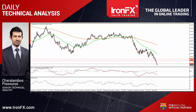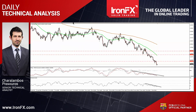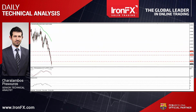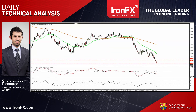Our oscillators confirmed the negative momentum and enlarged the case that we are likely to see the pair lower in the near future. On the 4-hour chart, the MACD lies below both its zero and signal lines, pointing south, while the RSI dipped again below its 30 line. On the daily chart, the 14-day RSI stands within its oversold territory, pointing down, while the MACD stays negative and below its trigger.